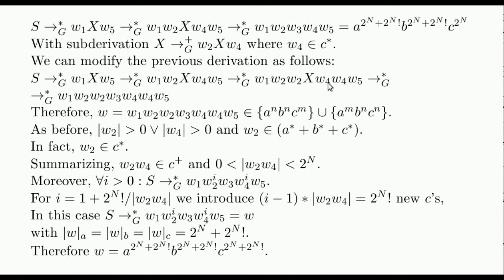We can construct this new derivation iterating the subderivation from X. Analogously to how we did in the previous video, it follows that this word is in the language, that either w2 or w4 is not empty, and that both of them are composed of a single symbol. Recall that in our current example we already knew that w4 was composed of c's.